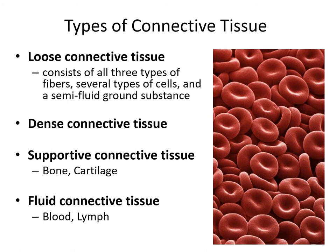Now that we've looked at the ground substance and fibers, let's look at the tissues themselves. Broadly, we have four categories of connective tissue. Loose connective tissue contains all three types of fibers in a meshwork within gelatinous ground substance, with several cell types free to wander around. Dense connective tissue is much denser, with a high proportion of collagen fibers, and is usually under large tensional stresses. Supportive connective tissue — bone and cartilage — is more rigid because it's been mineralized. And fluid connective tissues — blood and lymph — are mostly water.